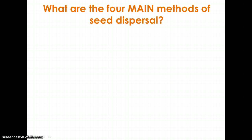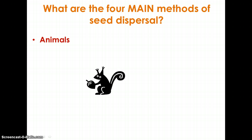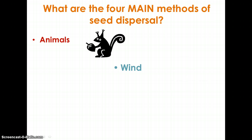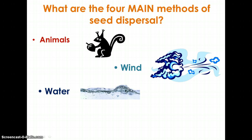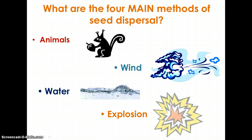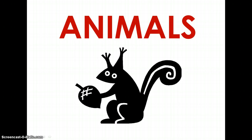There are four main methods of seed dispersal — not in any particular order: animal, wind, water, and explosion. We're going to look at each of these in a little bit more detail, and the first type we're going to look at is dispersal by animals.